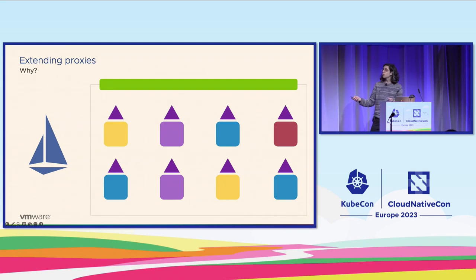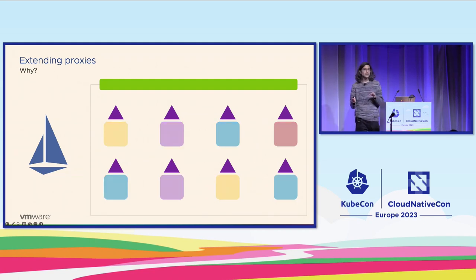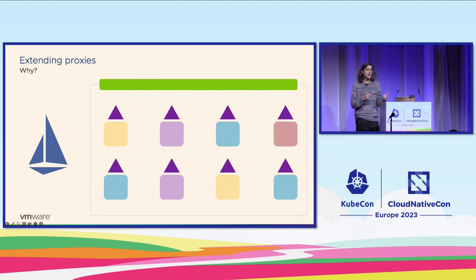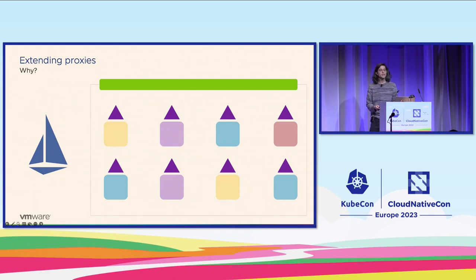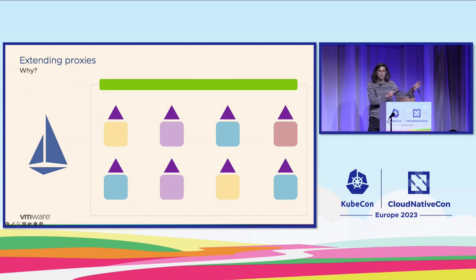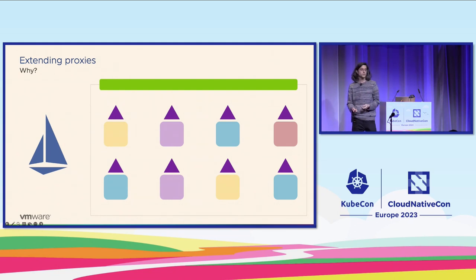But if we just focus on those small dots, proxies are all the same and all of them are managed by Istio. So they seem like a really good spot for placing third-party behaviors that can be reused by any service, because you do that just before they receive the traffic. And this is why we think this is really, really useful.